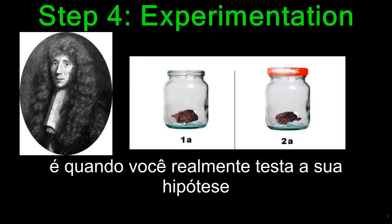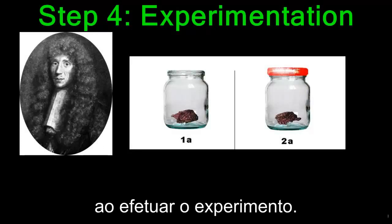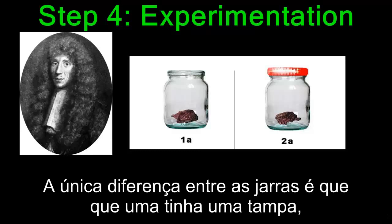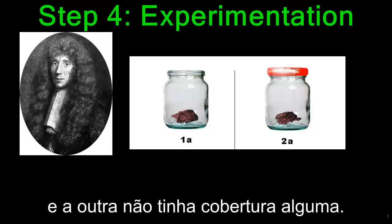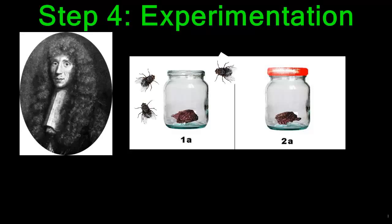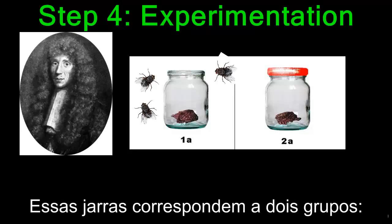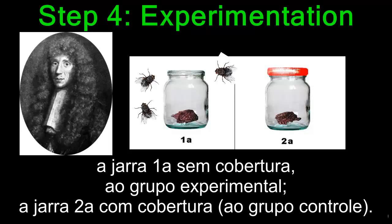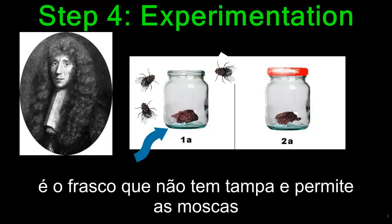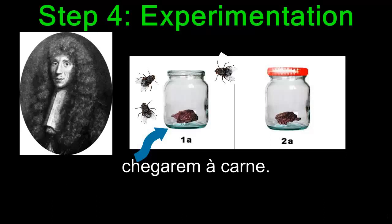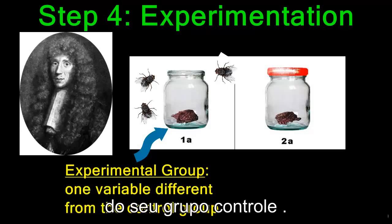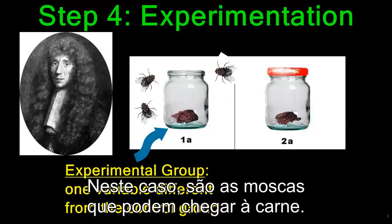Step 4 is when you actually test your hypothesis by conducting an experiment. In Redi's case, he set up two jars, both with pieces of decaying meat inside. The only difference between the jars was that one had a cover and the other did not. The one with no cover would attract flies to the meat. The experimental group is the jar with no lid, which allows flies to get to the meat. An experimental group has only one variable that is different from the control group — in this case, the flies.